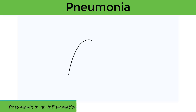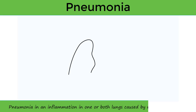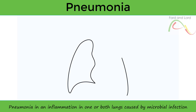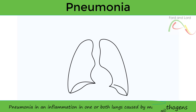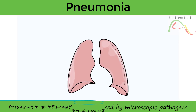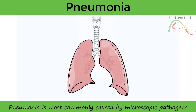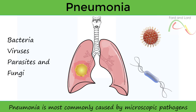The word pneumonia refers to inflammation of the lung parenchyma, mainly alveoli and interstitium. Most times, such inflammation is caused by microscopic pathogens, or microbes, as they're sometimes called. These pathogens include bacteria, viruses, parasites, and fungi.